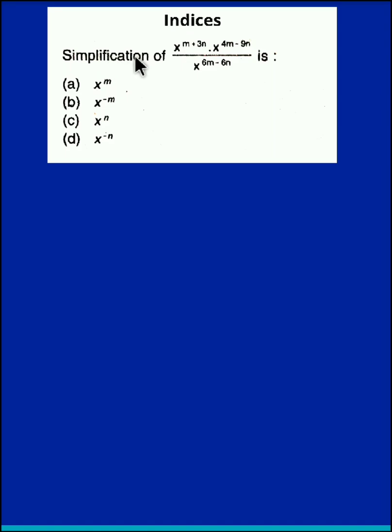The question is simplification of x raised to m plus 3n times x raised to 4m minus 9n divided by x raised to 6m minus 6n.